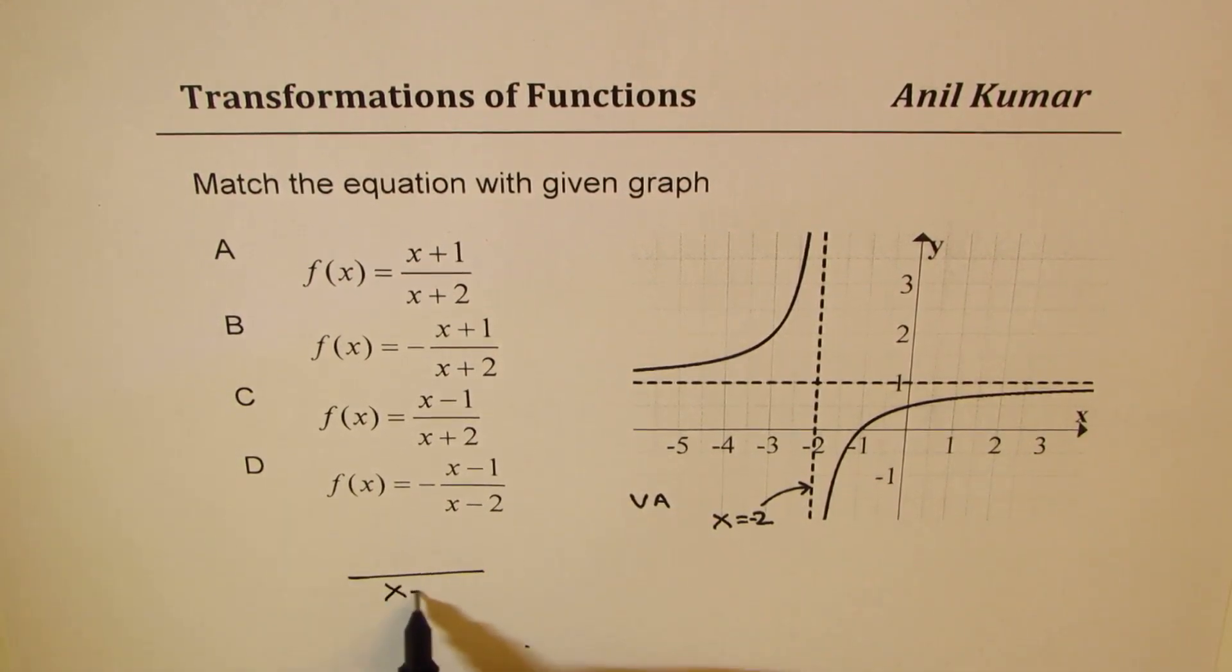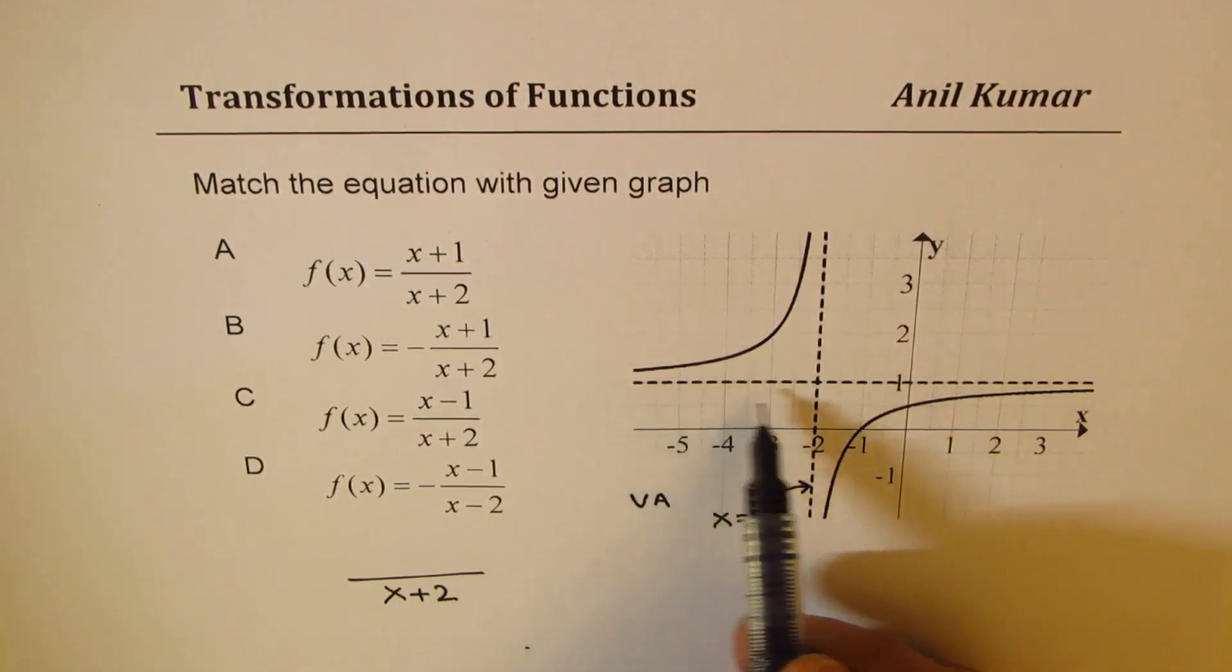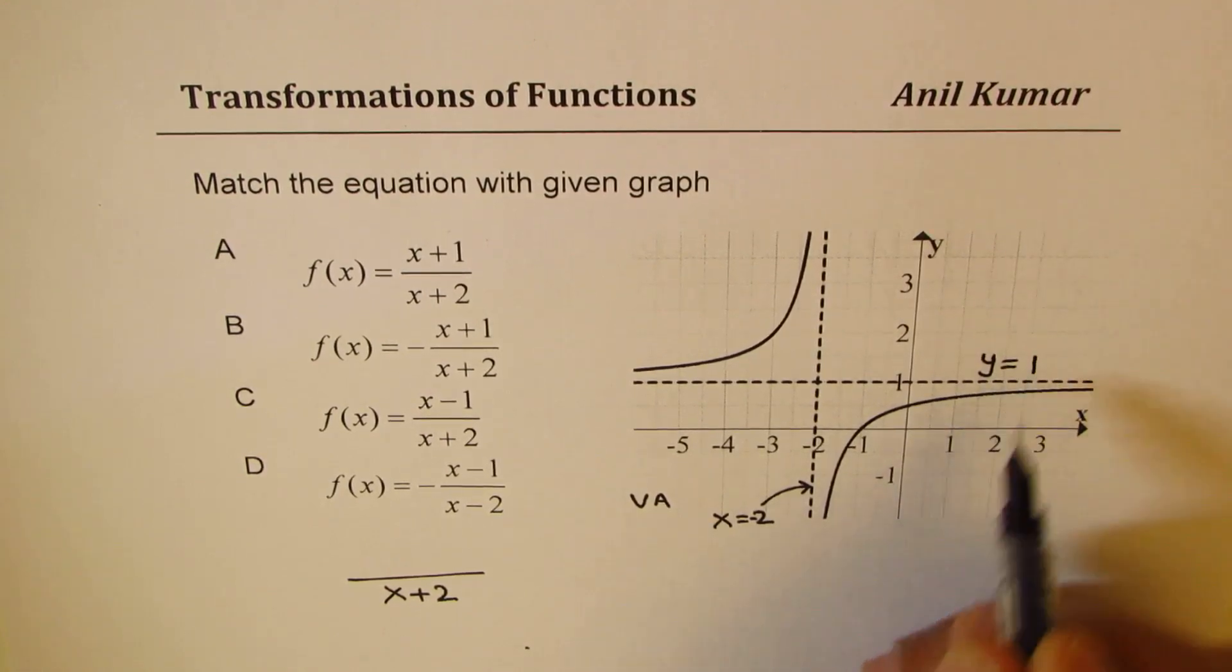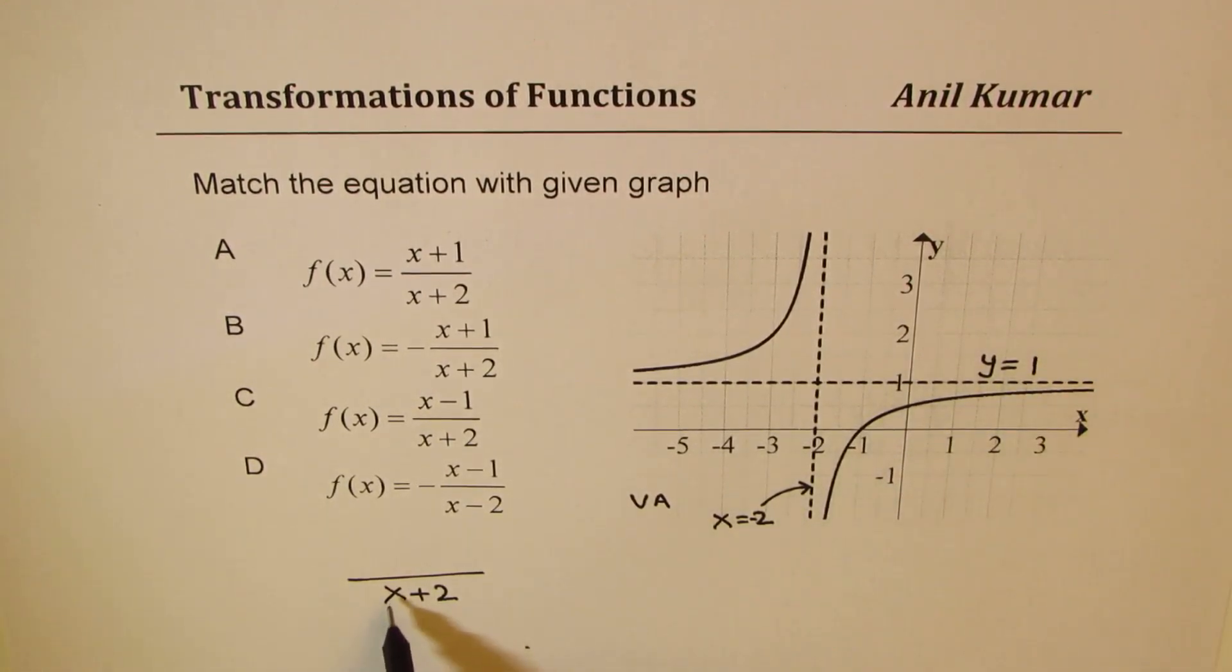Now, the horizontal asymptote is y = 1. That means the leading coefficients ratio is the same. That is what is going to give you a horizontal asymptote of 1.